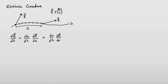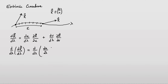Now let's consider the double derivative. The double derivative with respect to lambda, d²r/dλ², is the second derivative. We're always interested in curvature, and curvature is defined by second derivatives, not first derivatives. So this is equal to (d/dλ)[(du/dλ)(∂r/∂u) + (dv/dλ)(∂r/∂v)].